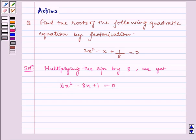Now splitting the middle term, we get 16x² - 4x - 4x + 1 = 0.